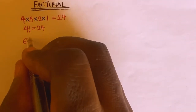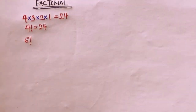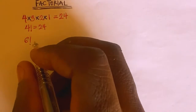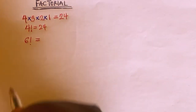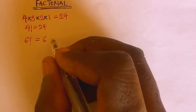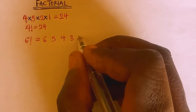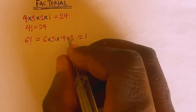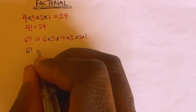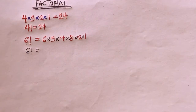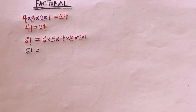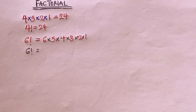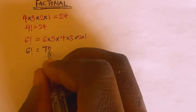Now, let's say you are asked to find the value of 6 factorial. It's very simple. What you have to do is write out the numbers from 6 down: 6, 5, 4, 3, 2, 1, then introduce multiplication signs. So, 6 factorial equals 6 multiplied by 5 multiplied by 4 multiplied by 3 multiplied by 2 multiplied by 1, which gives us 720.